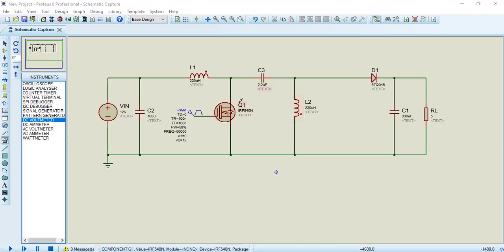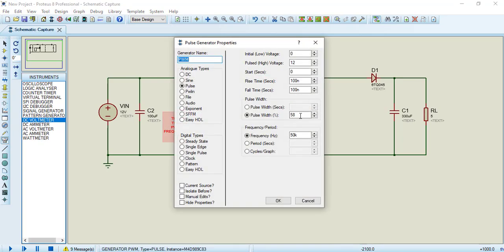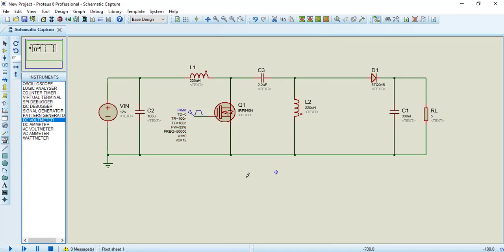Now let's see Proteus simulation of SEPIC converter in buck mode. For that, open PWM signal, and make setting of duty cycle equal to 33%. Also set other values as shown in PWM window, connect digital DC voltmeter across output load.